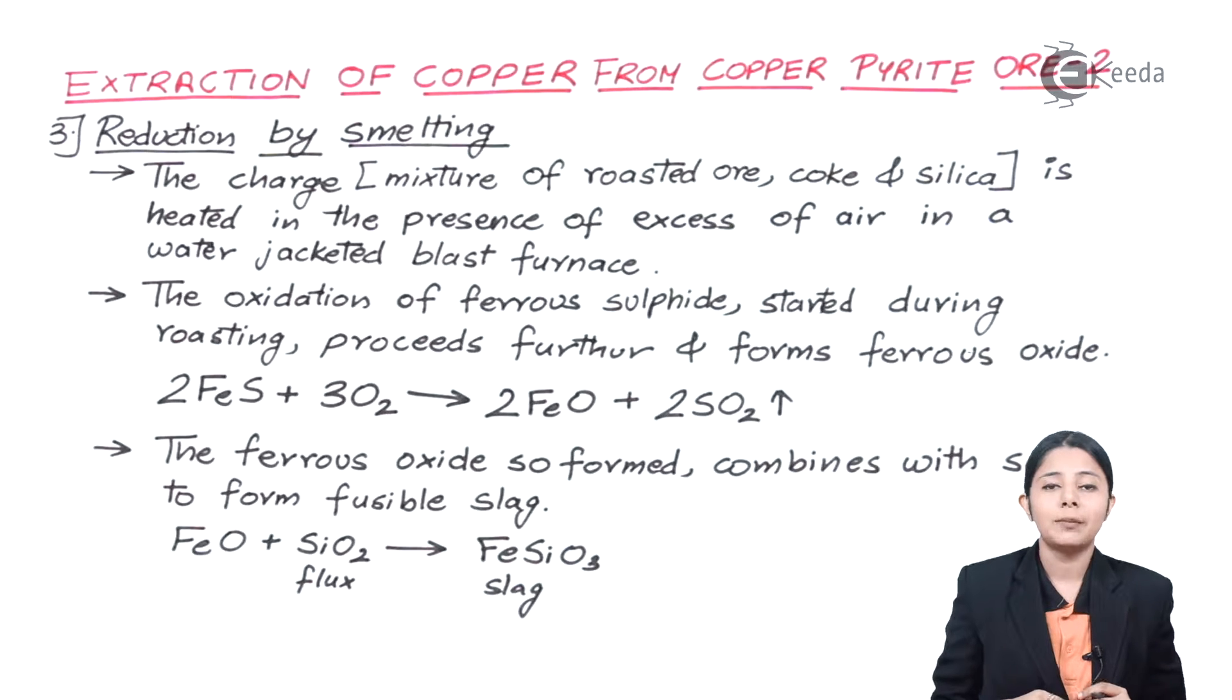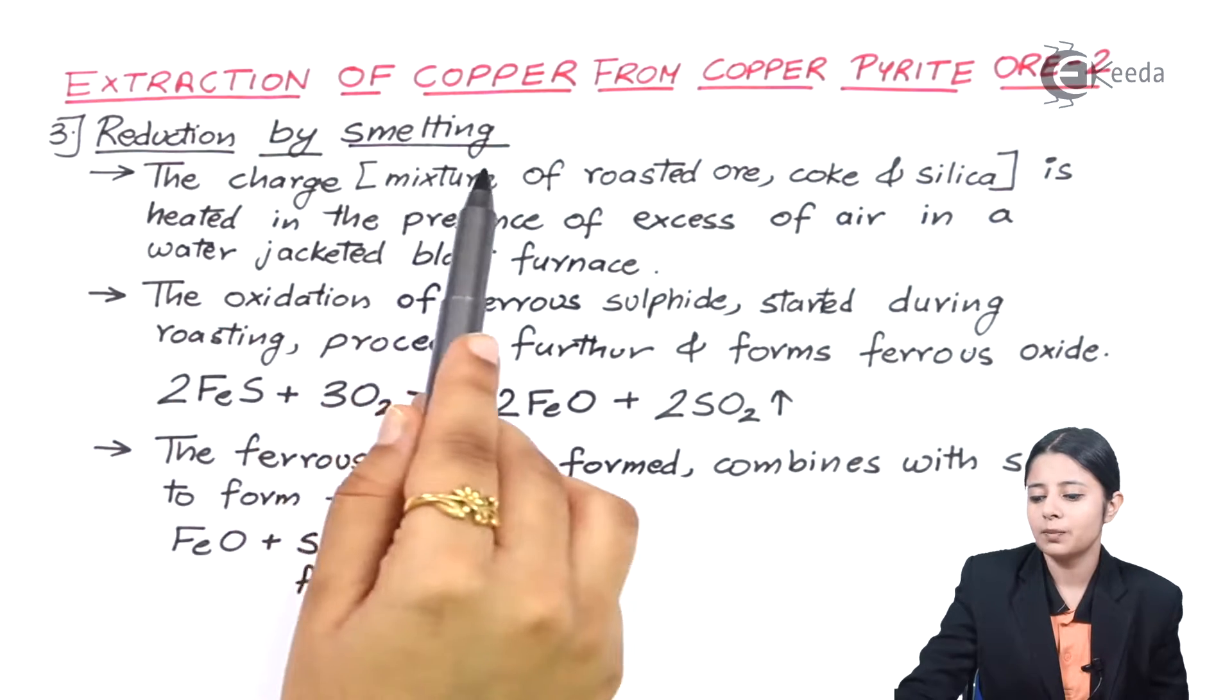Now let us see the chemical reactions of smelting, reduction with the help of smelting. What do I mean by reduction? If I say I am reducing some compound or reducing some element, that means I am removing oxygen from it. So now let us remove oxygen or remove the oxides from the copper ore with the help of a process known as smelting.